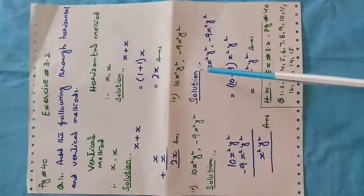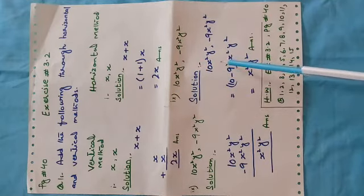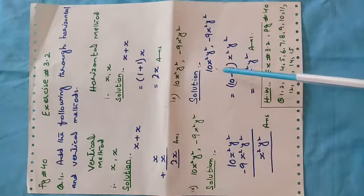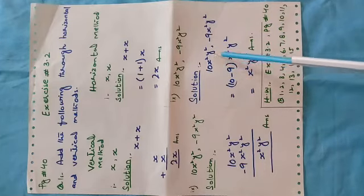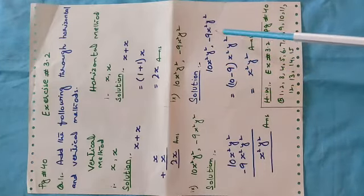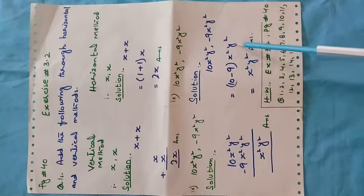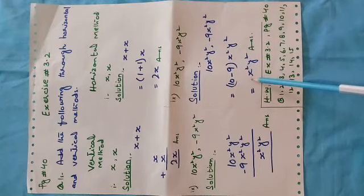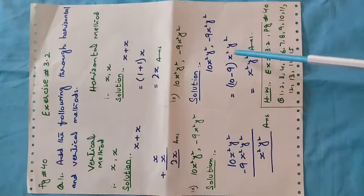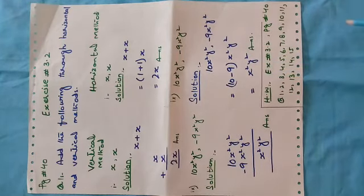Now we solve this question by the horizontal method. We write the heading, rewrite the question, and put the coefficients in brackets. The first coefficient is 10 and the second coefficient is minus 9. The variables go outside the bracket. So 10 minus 9 equals 1, and we don't write the 1. The answer is x²y². Is that clear, students?